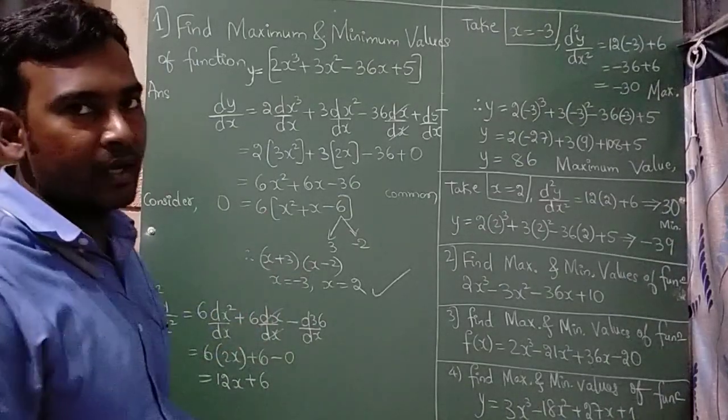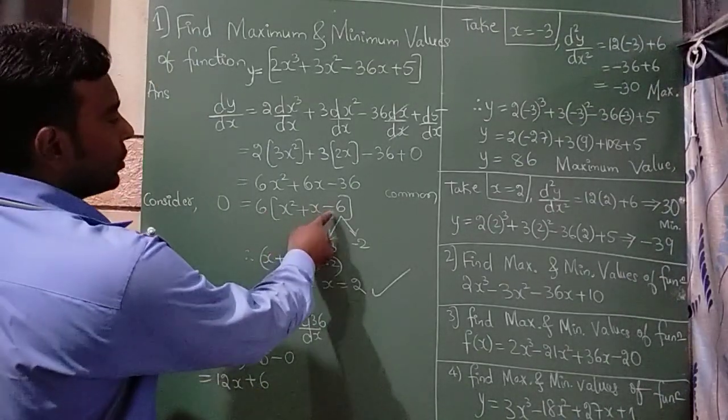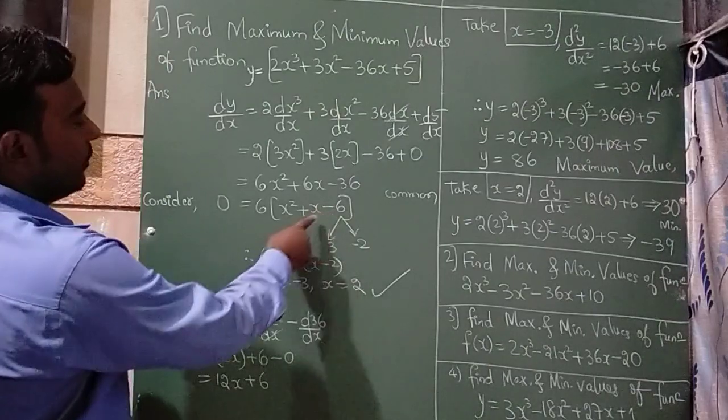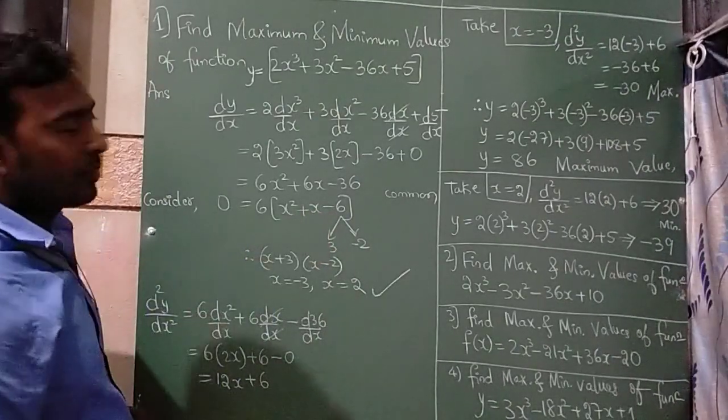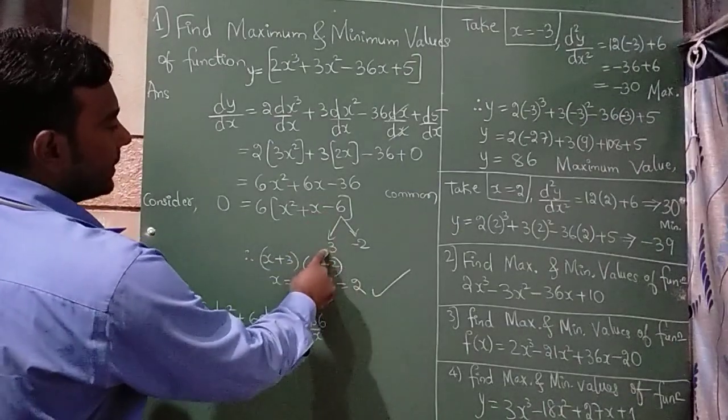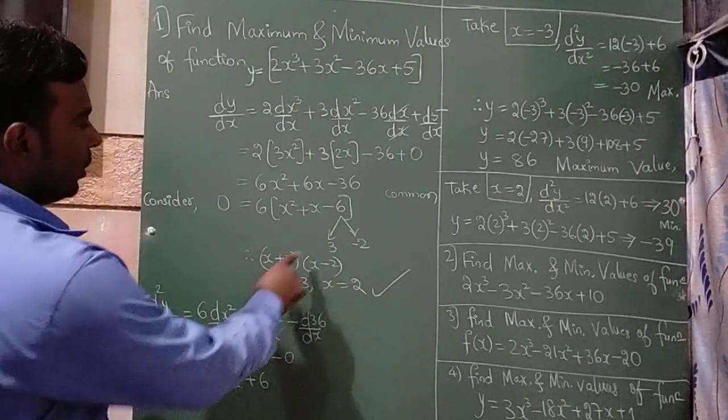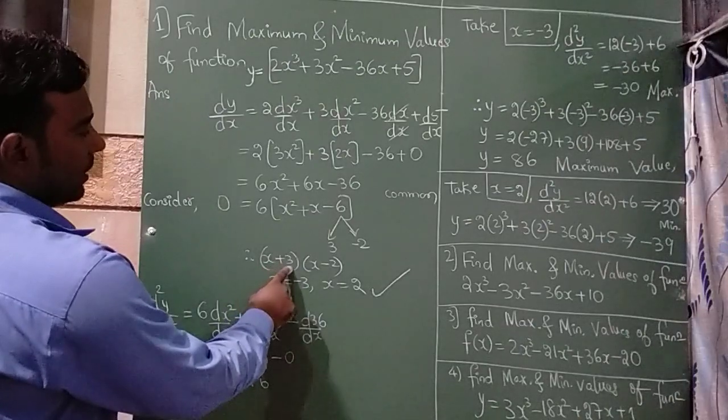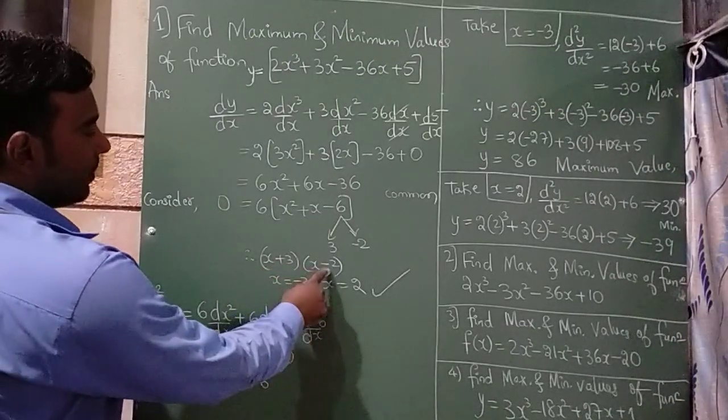Now you have learnt this in the lower classes, if you multiply you should get the last number and if you add you should get this number. Now 3 times 2 is 6, since there is a minus here and 3 minus 2 is 1. So I can write (x + 3)(x - 2).